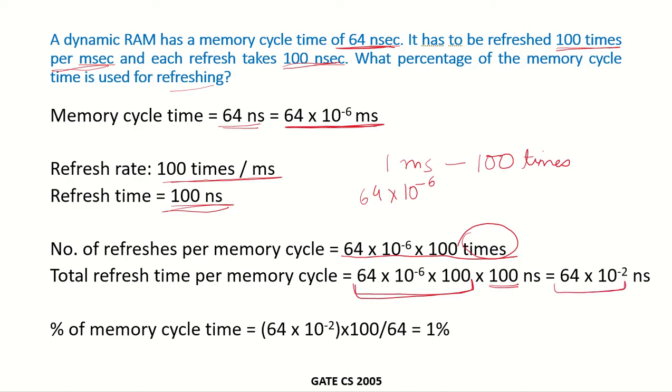So the total time that would be taken would be 64 × 10^-2 nanoseconds in 1 memory cycle.